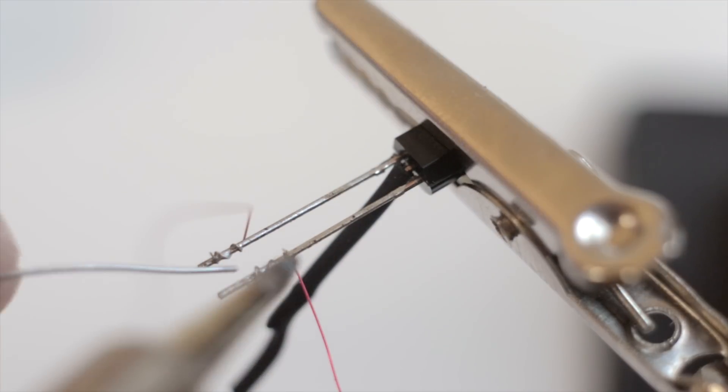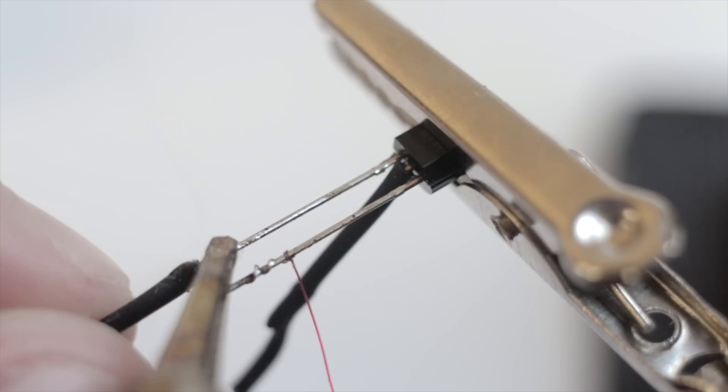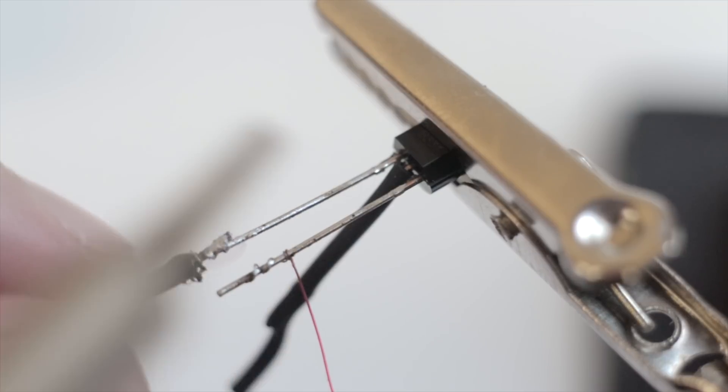Next step. Solder any end of 30 turns coil to 3rd transistor terminal, it's collector. Solder a little piece of regular wire to the 1st transistor leg, it's going to be power.